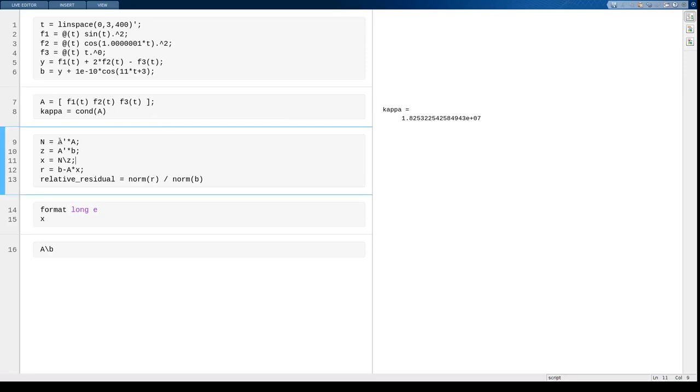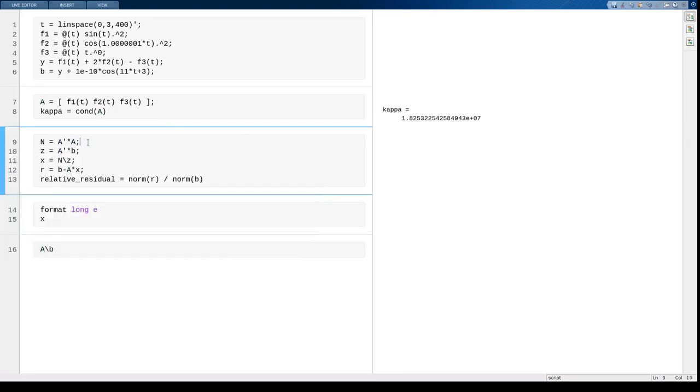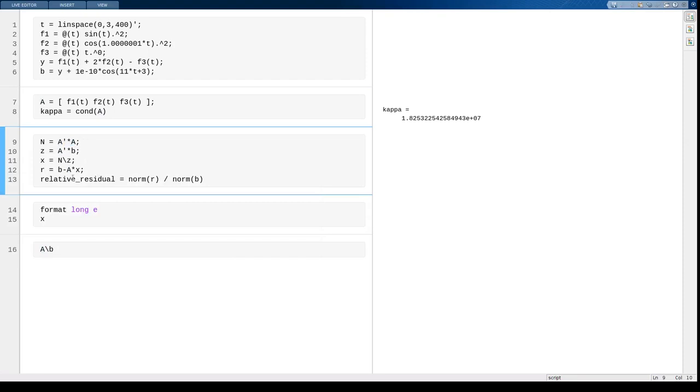So when I use the normal equations, this is going to square that condition number and make it 10 to the 14th, which is quite large compared to machine precision. But it's still able to get an answer with a small residual.